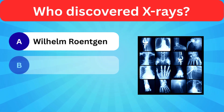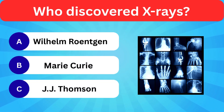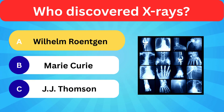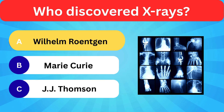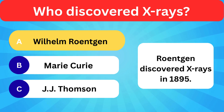Who discovered X-rays? Options: Wilhelm Röntgen, Marie Curie, J.J. Thompson. Correct answer is Wilhelm Röntgen. Röntgen discovered X-rays in 1895.